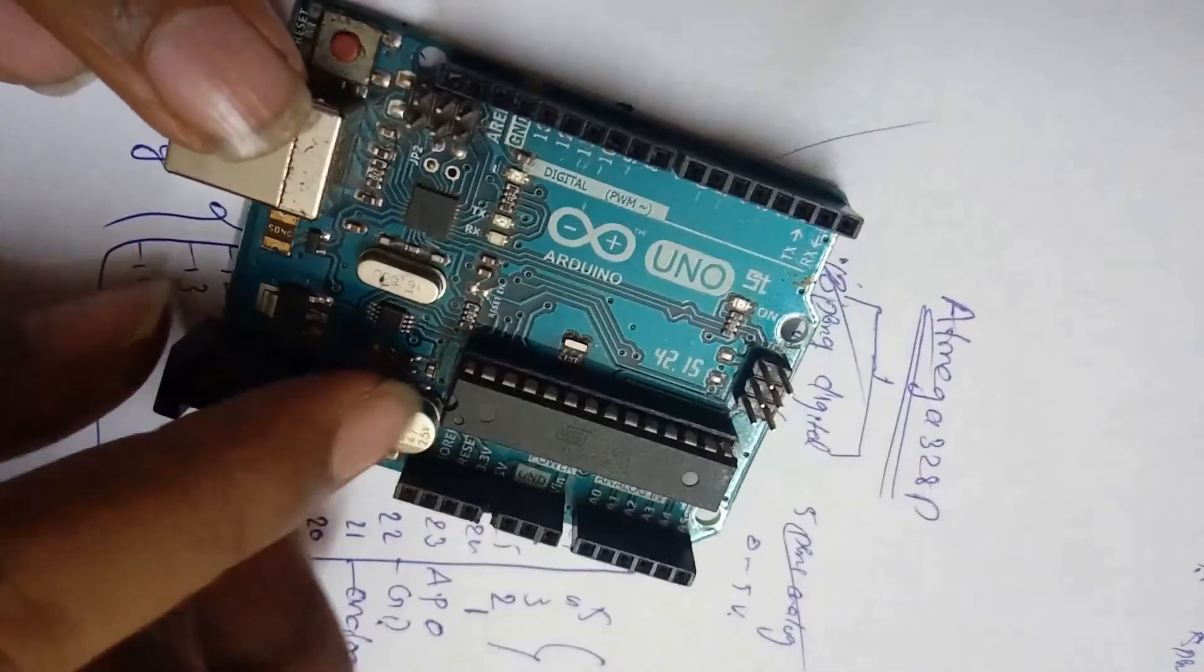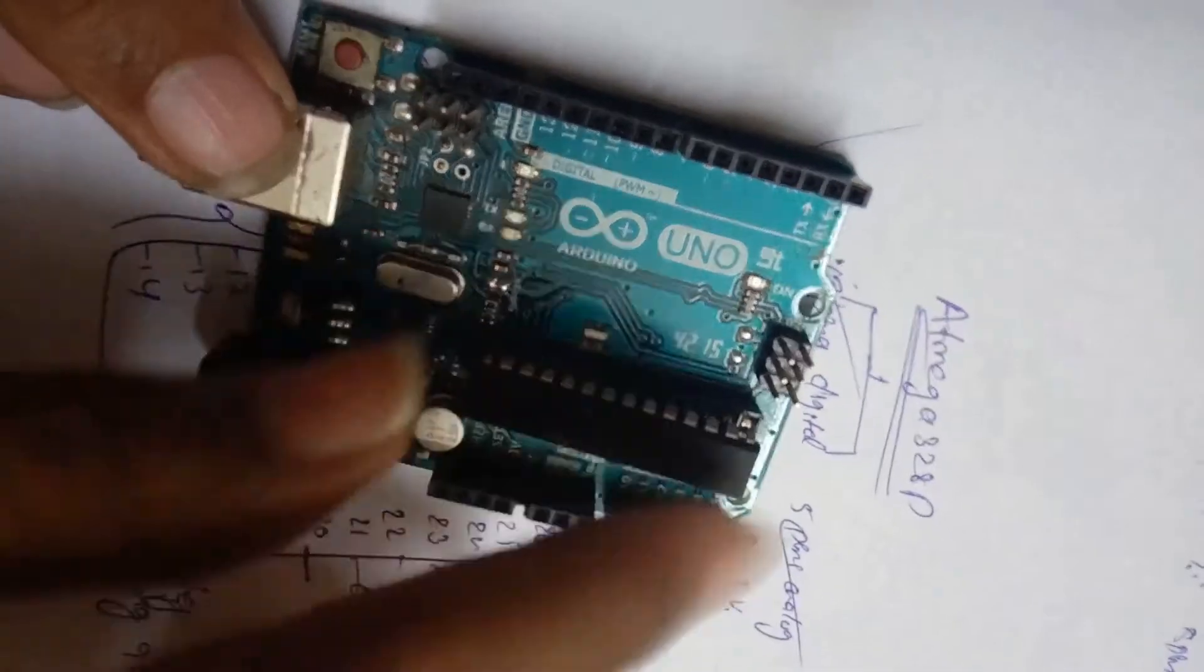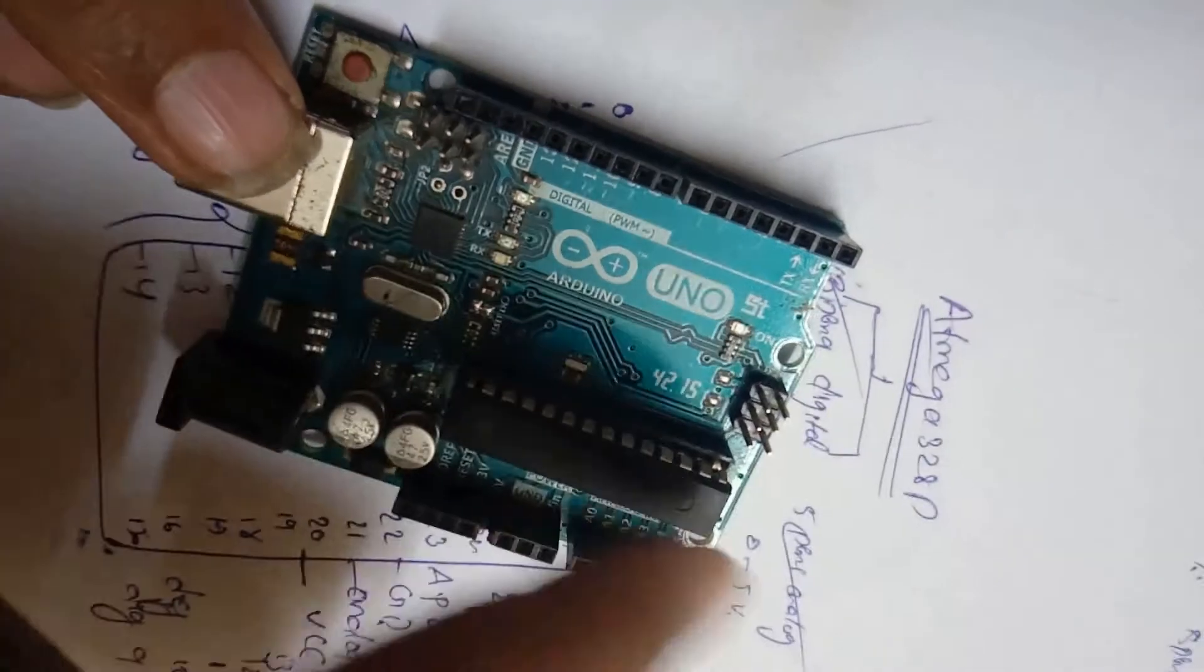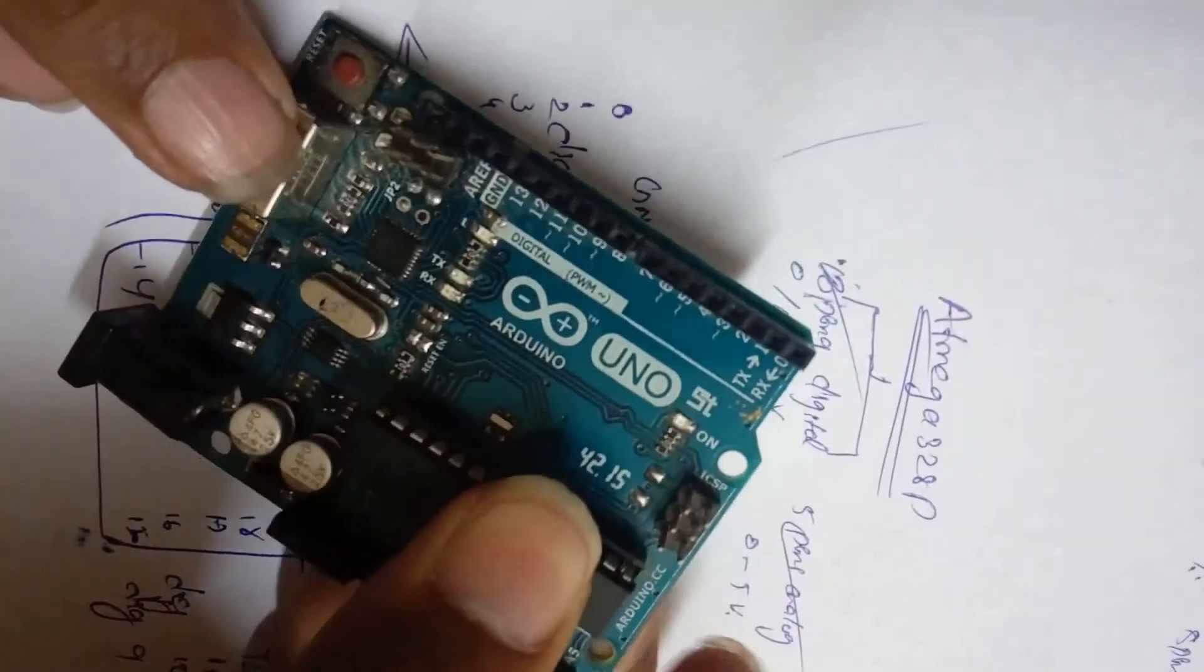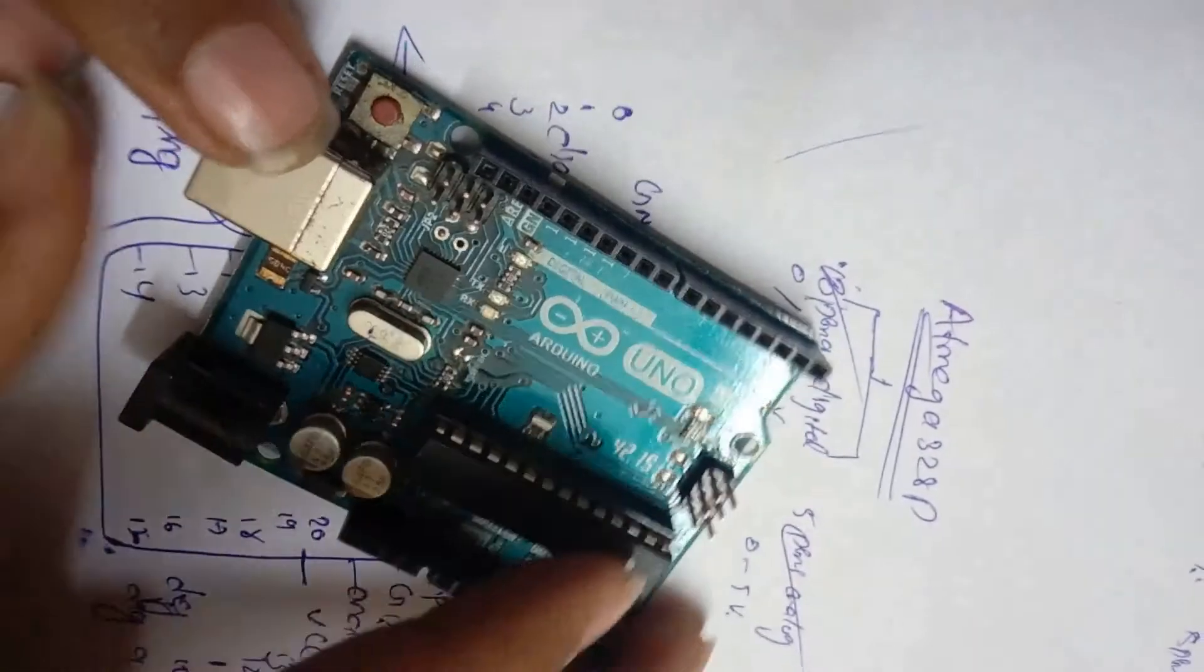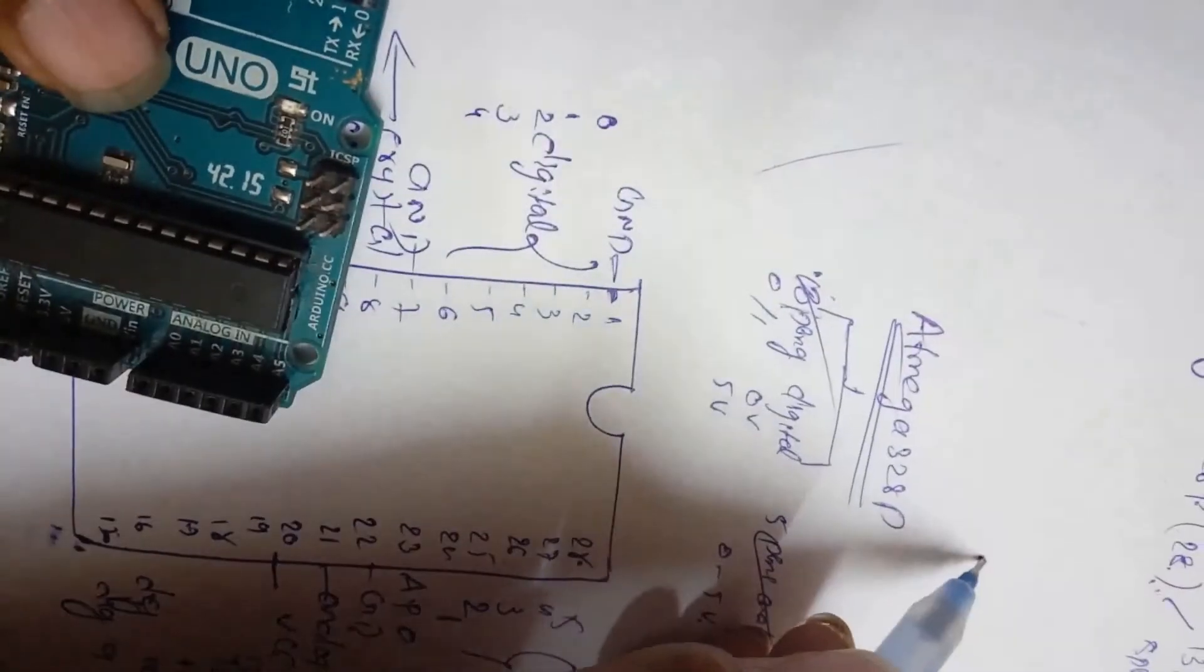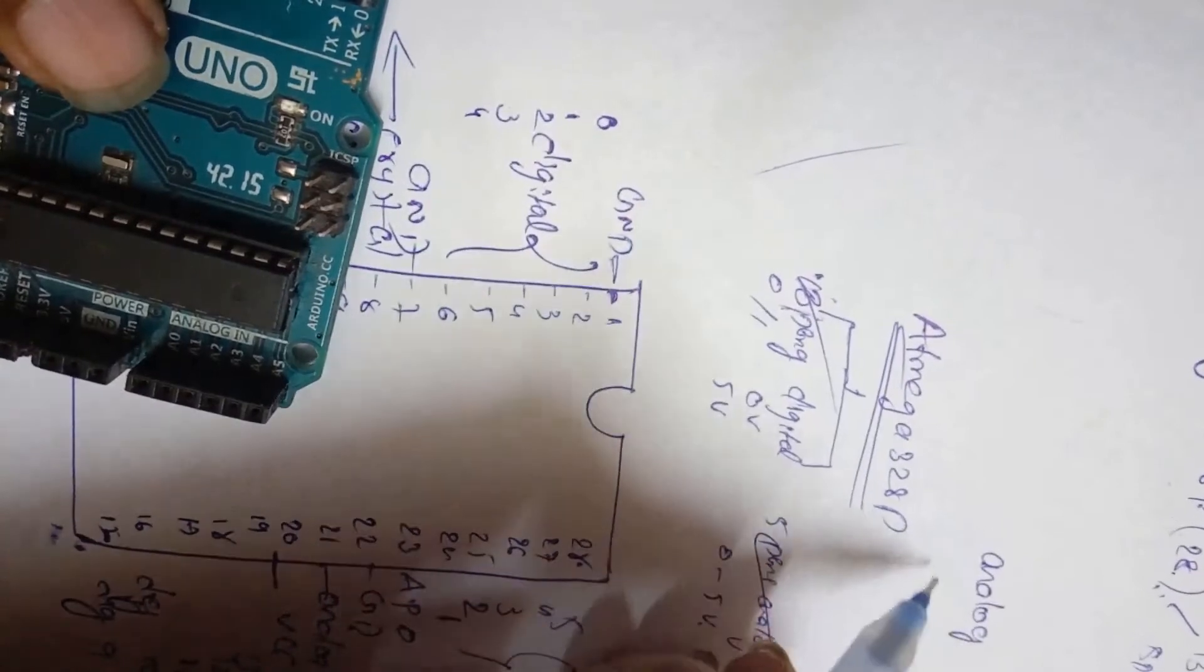And two capacitors, filters for filtering the DC voltage coming from 5 volts to this microcontroller. This is all about the board. Coming to communication: analog and digital.